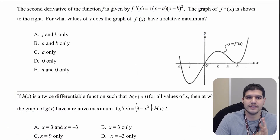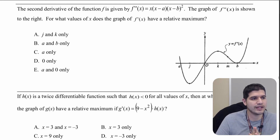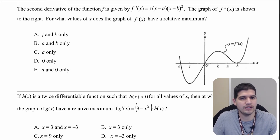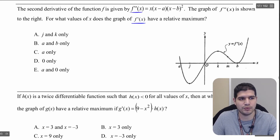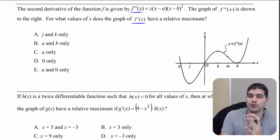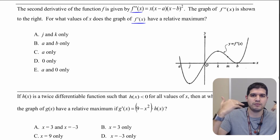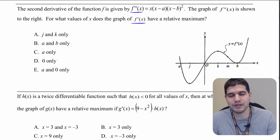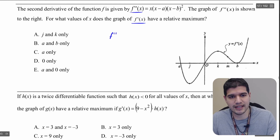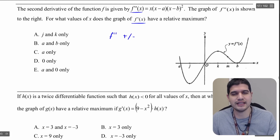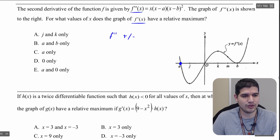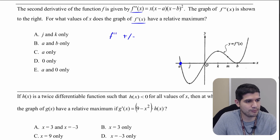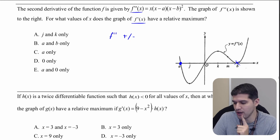Now we have f double prime of x equals x times (x minus a) times (x minus b) squared, and we're shown the graph of f double prime. We want to know for what values of x does f prime have a relative maximum. F prime has a relative maximum where f double prime goes from positive to negative. Looking at the graph, that only happens at one point — answer A only.